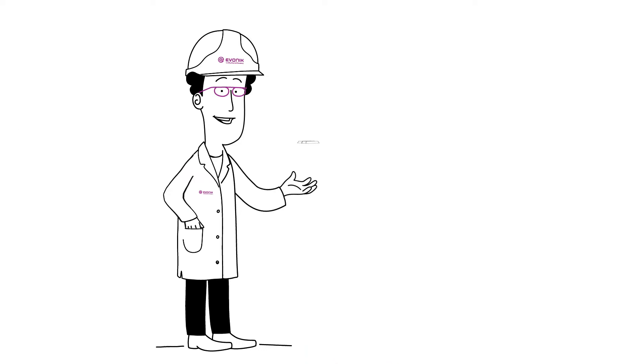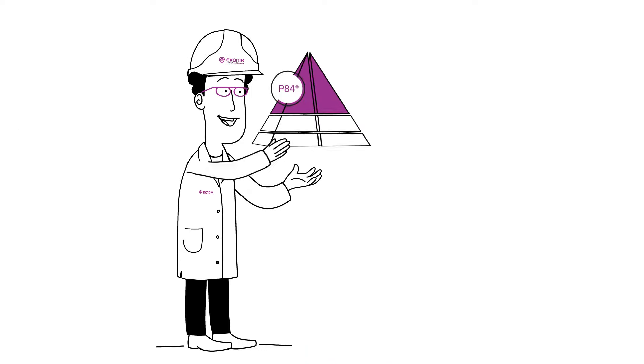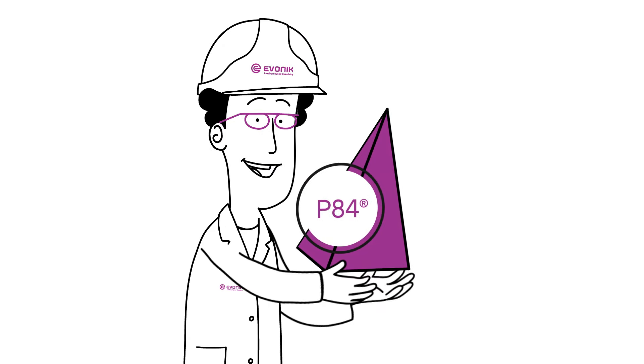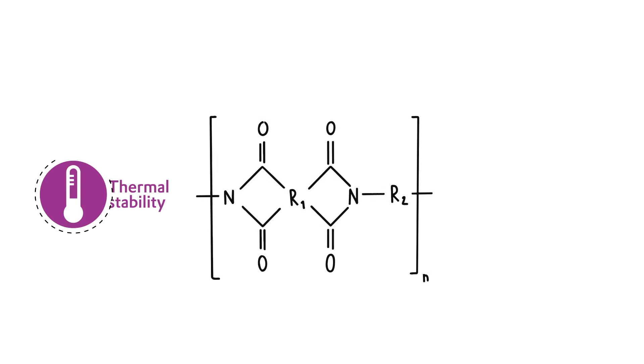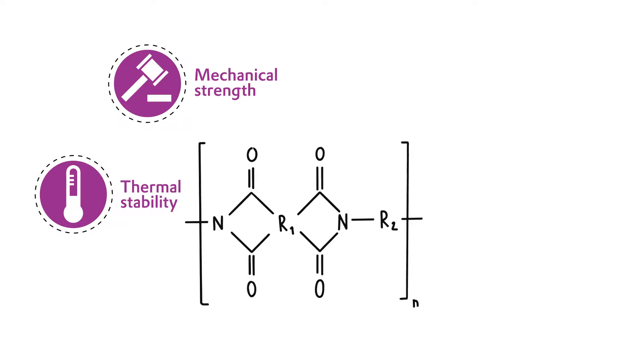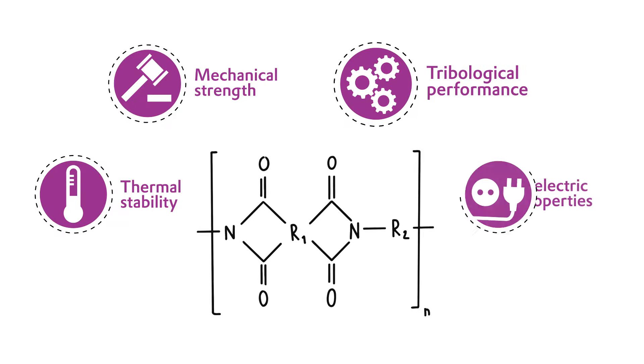Let's summarize the advantages of Evonik's specialized P84 polyamides for demanding industrial applications. Offering unique material properties such as high temperature resistance, high chemical and mechanical strength, or superior tribological and insulation properties.